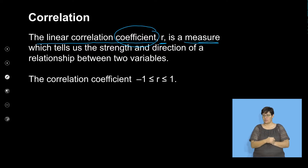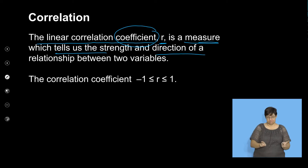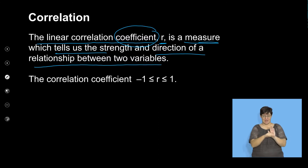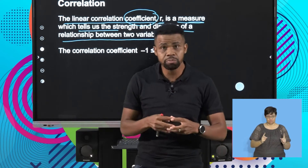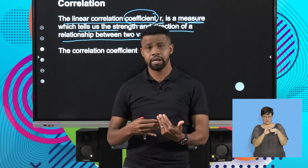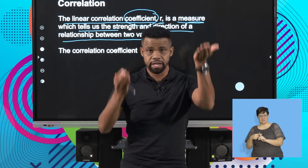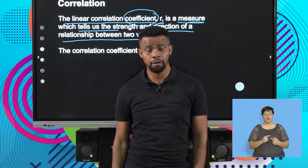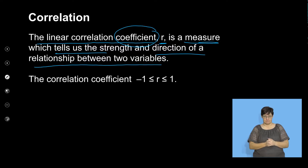The correlation coefficient R measures the strength and the direction of a relationship between the variables. The strength means the association, and the direction means whether it's negative or positive. Positive — the variables move together. Negative — if one moves up, the other moves down. It's the strength and the direction.